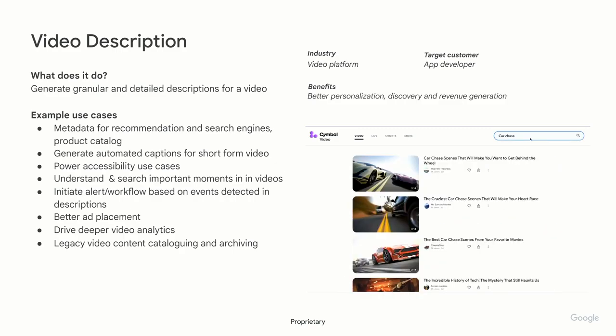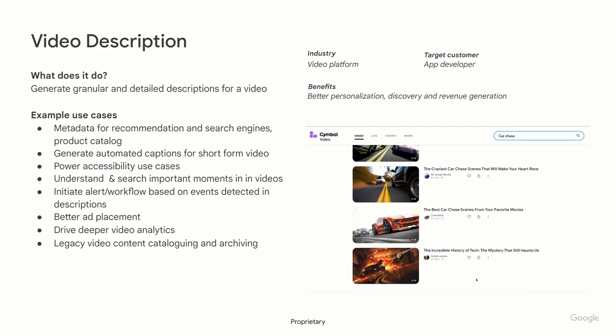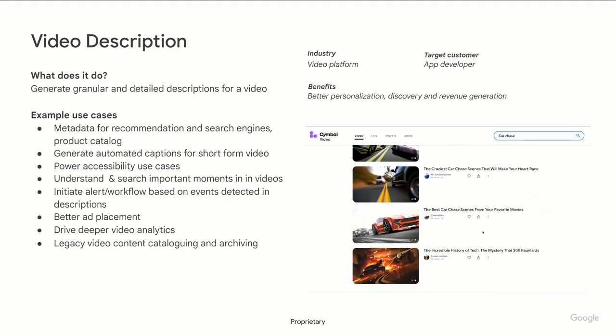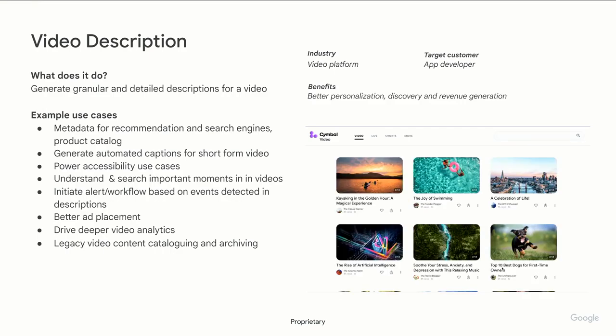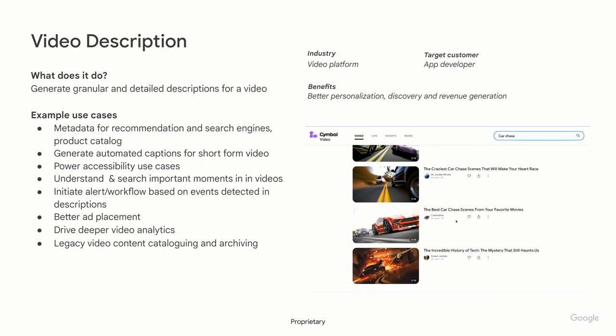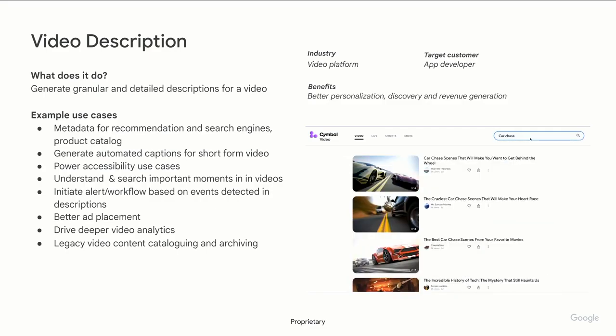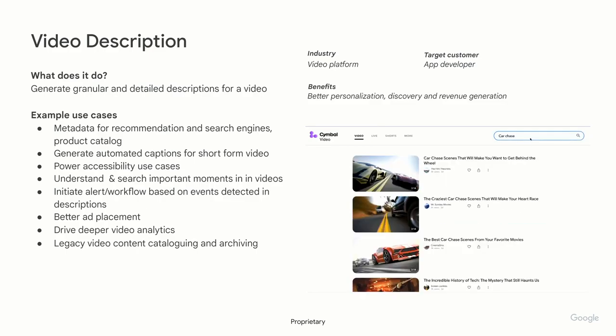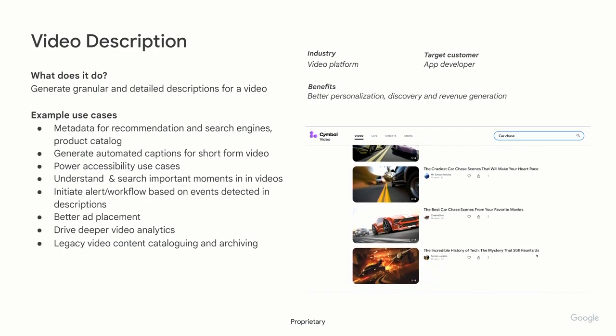Another use case is automated captions — similar to what we saw with images — for short-form videos like 15 or 30 seconds. Accessibility too, like the tourism app example. And understanding and searching important moments — if you had a detailed rendering of an entire video in text form, you could search for important terms. For example, with a six-hour baseball game video, you could search for terms like home run, strike, or audience cheering, then stitch those moments together into a highlight reel.